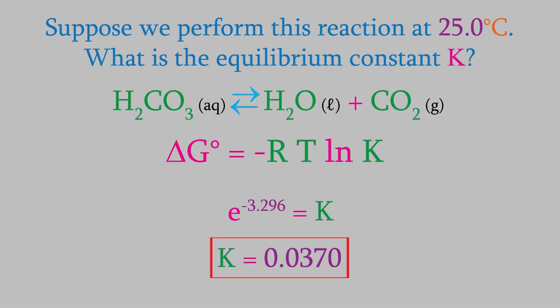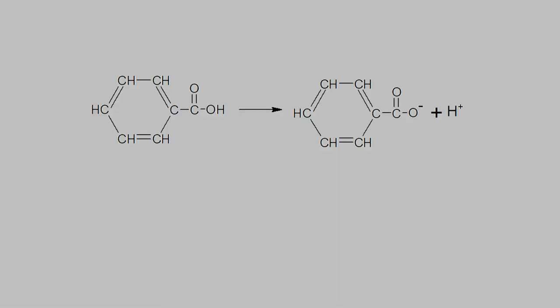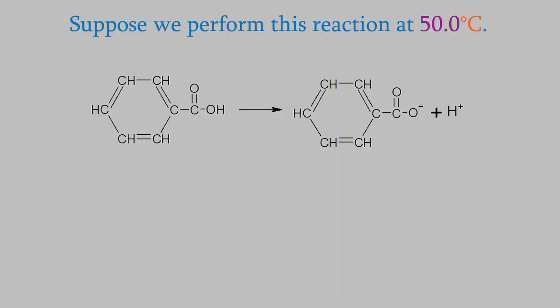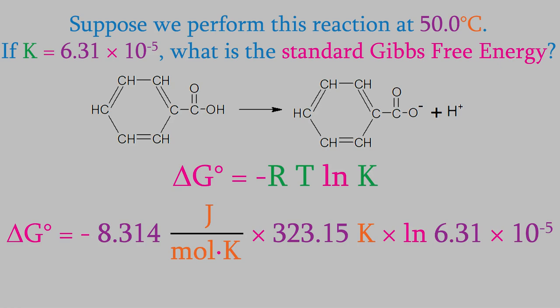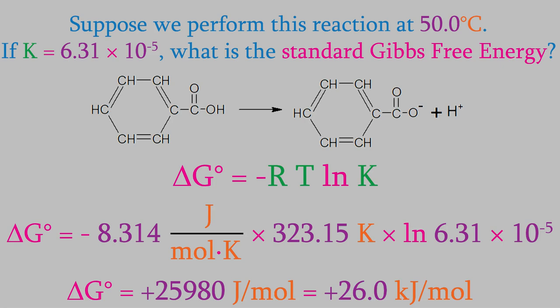This calculation can also be used in reverse. If we know the equilibrium constant, we can determine delta G° for a reaction. For example, suppose we want to know more about the reaction in which benzoic acid dissociates in water at 50.0 degrees Celsius. The equilibrium constant for that reaction is 6.31 × 10⁻⁵. From that, we can determine the standard delta G°. When we perform the calculation, we get positive 25,980 joules per mole, or using significant figures, delta G° is positive 26.0 kilojoules per mole.